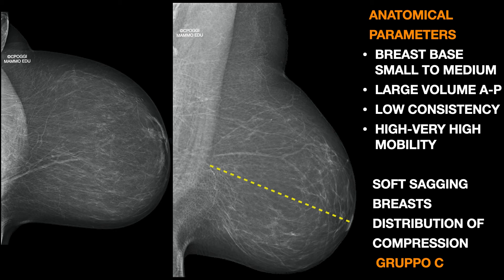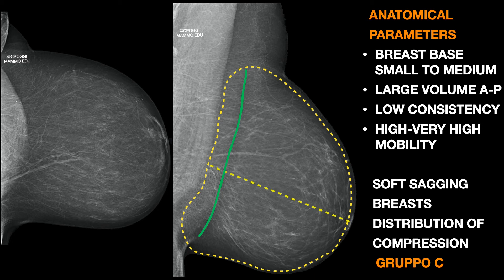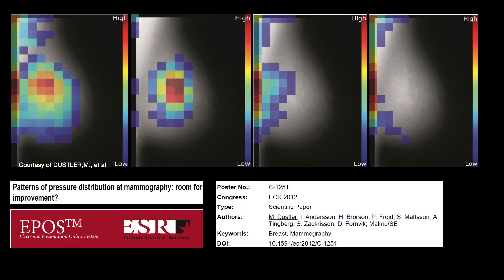In Group C, the breast base on the chest wall is medium or even small when compared to the anterior-posterior dimension of the volume. Low consistency — they are soft breasts, very manipulatable, and usually sagging too. The problem here is related to the distribution of the compression force, which is not uniform throughout the area. In Group C, the axillary tails and the axiothoracic tissue can be very thick. Those portions absorb most of the force applied, thus preventing adequate compression of the anterior part of the breast, where we would like to always have it because most of the gland is found there.